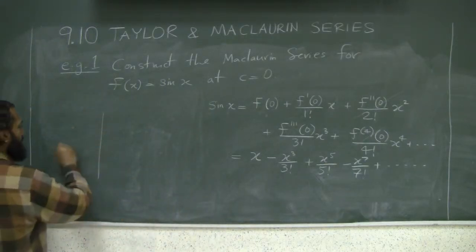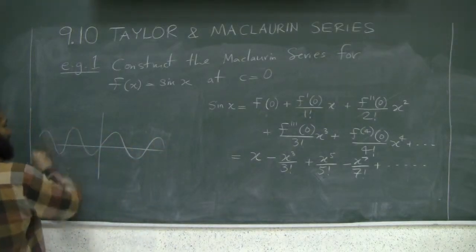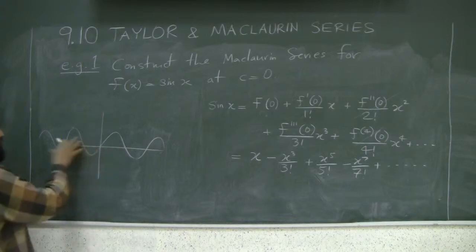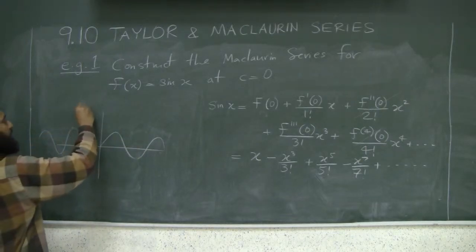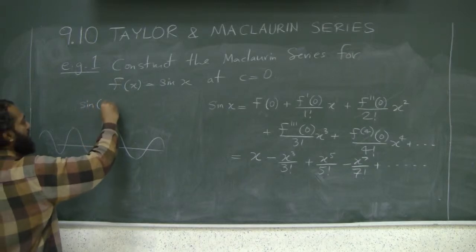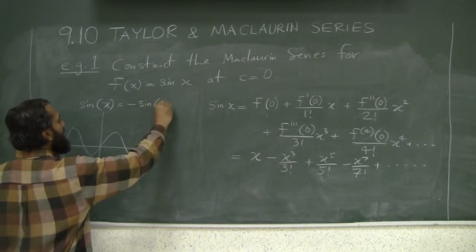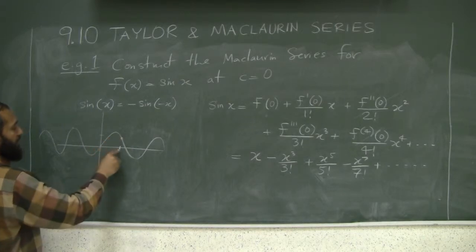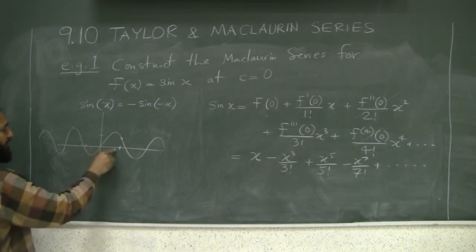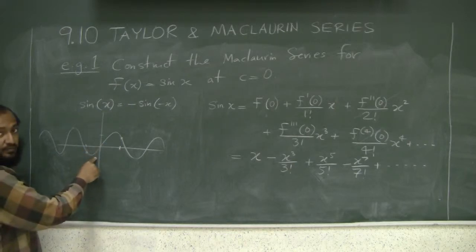It is symmetric about the origin. Sine looks like this—if you take one side and rotate it 180 degrees, you get the other side. Sin(x) equals negative sin(-x). In other words, if I take some value here, the value of sine would be some positive value. If I take the same value on the other side of zero, the value will be the same height but negative.